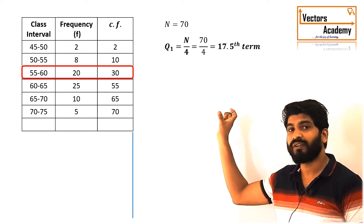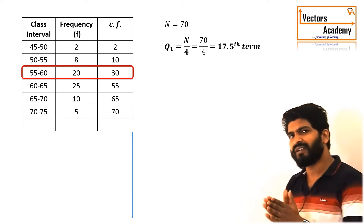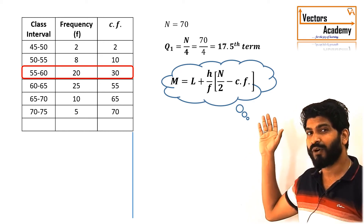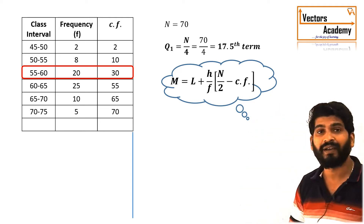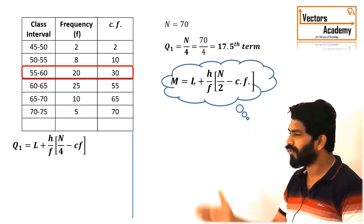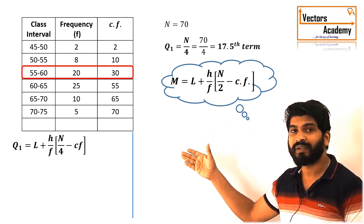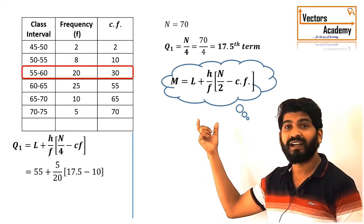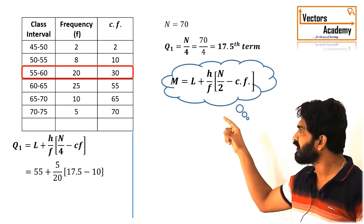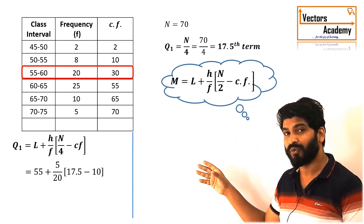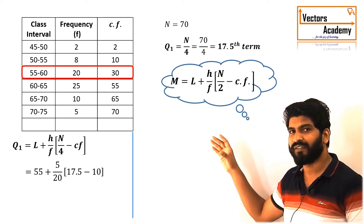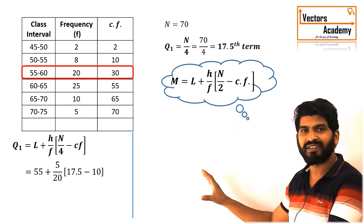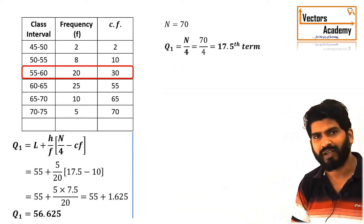Using that third class for Q1, recall the median formula: l + (h/f) × (n/2 − cf). For Q1, the factor n/2 is simply replaced by n/4. So: l is the lower class limit of the selected class, which is 55; h is the class width, which is 5; f is the frequency of the selected class, which is 20; n/4 = 17.5; and cf is the cumulative frequency of the previous class, which is 10. Substituting all these values gives us the first quartile.